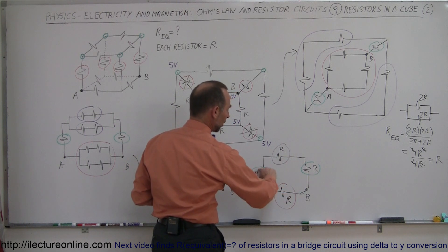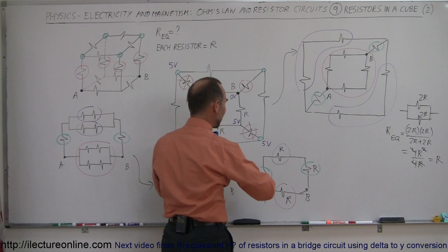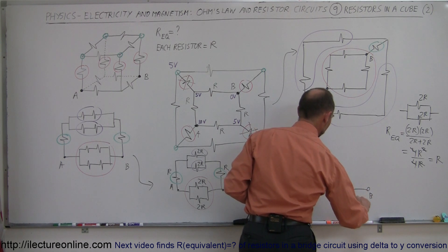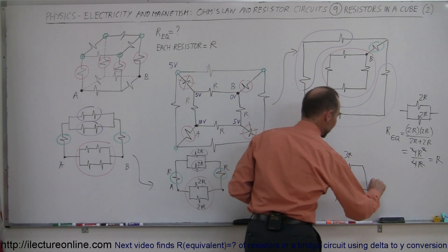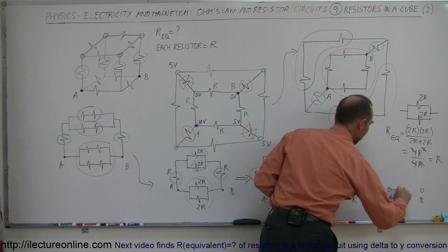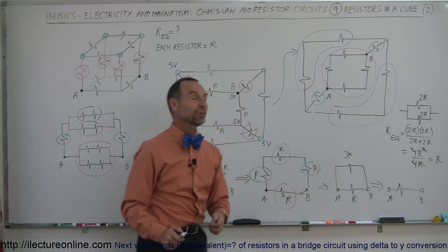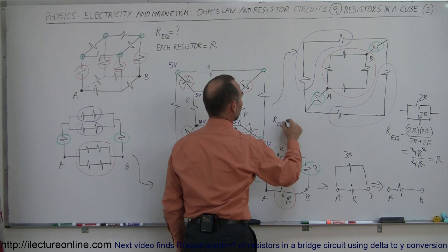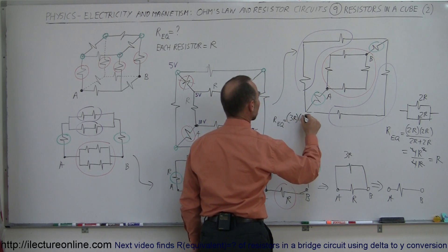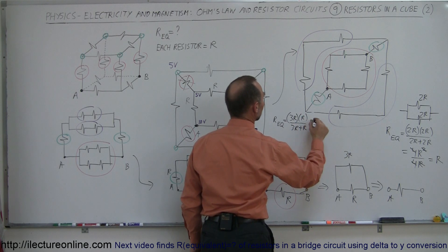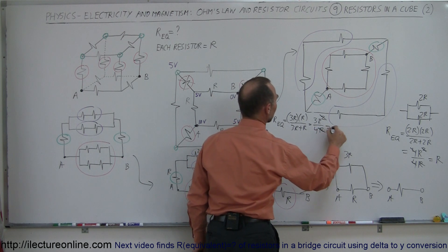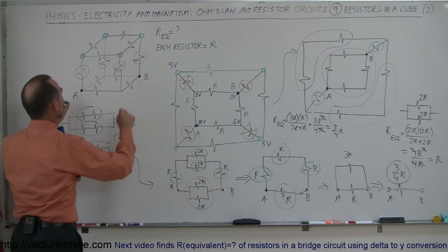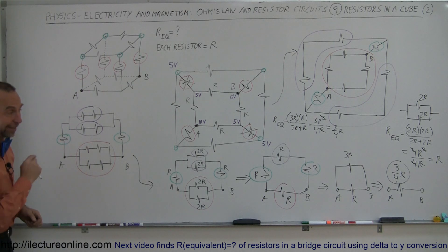Finally, we combine those into a single resistor going from A to B. What is the equivalent of an R and a 3R resistor in parallel? Using product over the sum: R_equivalent = (3R × R) / (3R + R) = 3R² / 4R = 3R/4. And that is finally the equivalent resistance of that entire cube, assuming we want the resistance between A and B on the very bottom edge of the cube. And that's how you do that.